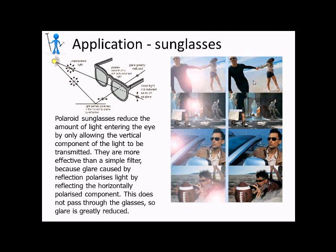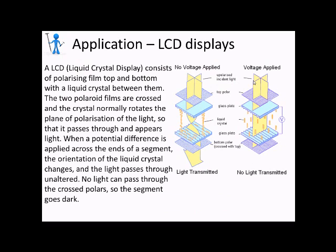An application of this is sunglasses. So, in sunglasses, only the vertical component of the light is allowed through. This is going to help reduce glare and help you see clearer through your sunglasses.